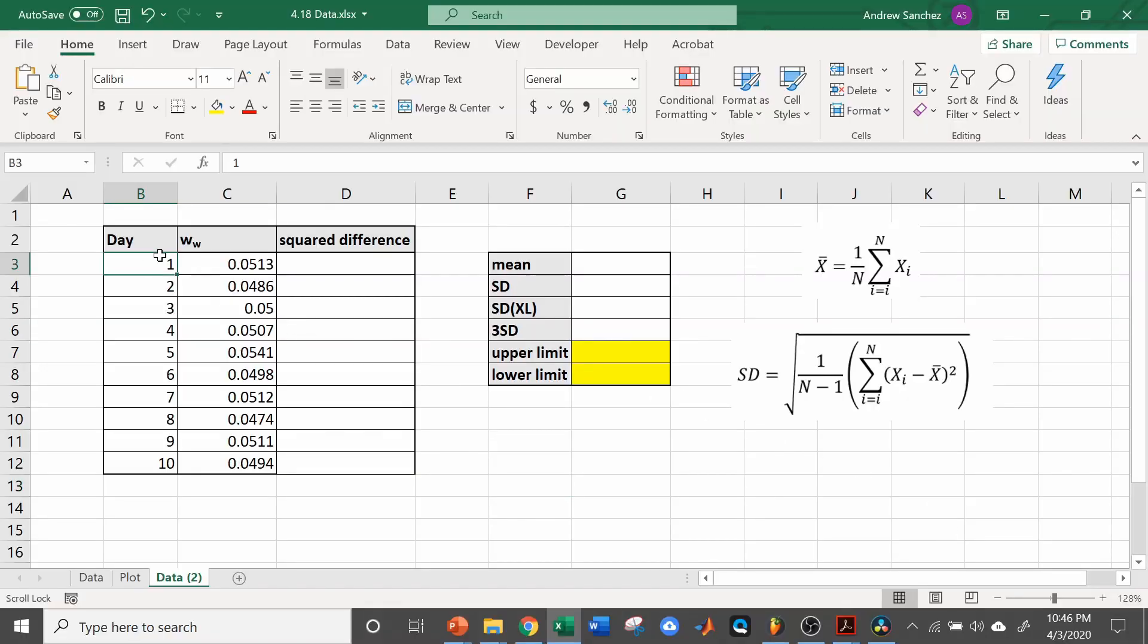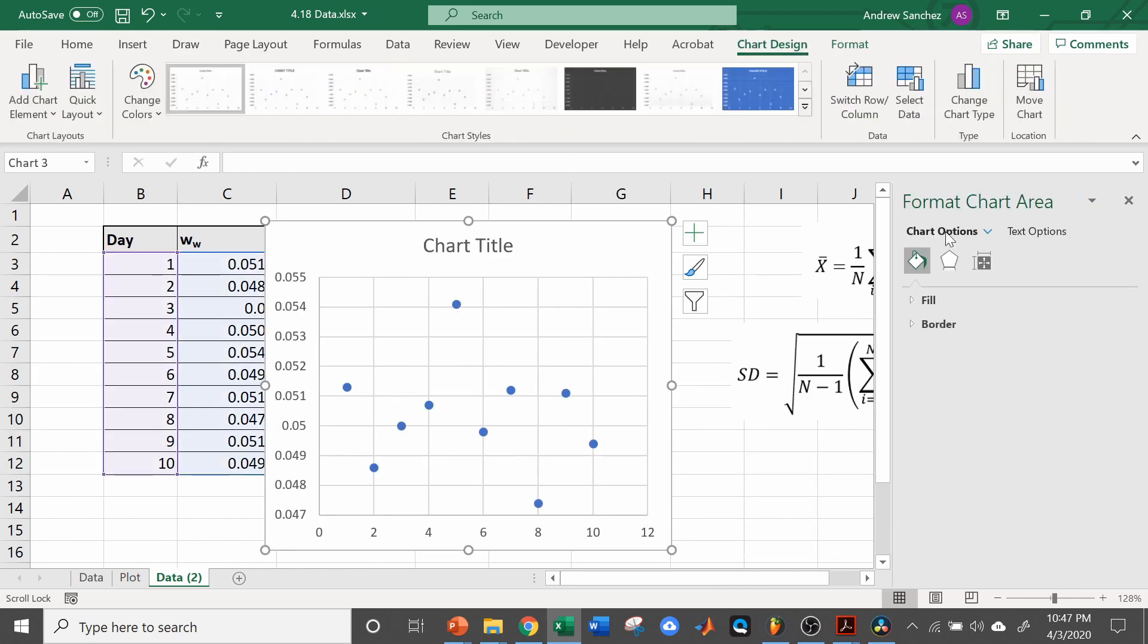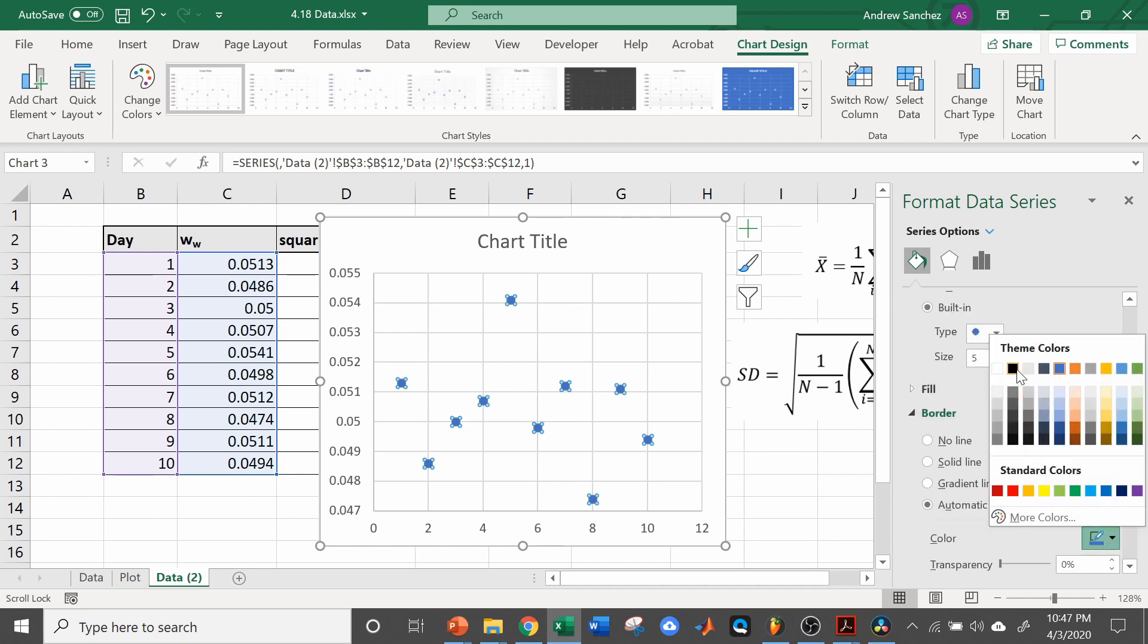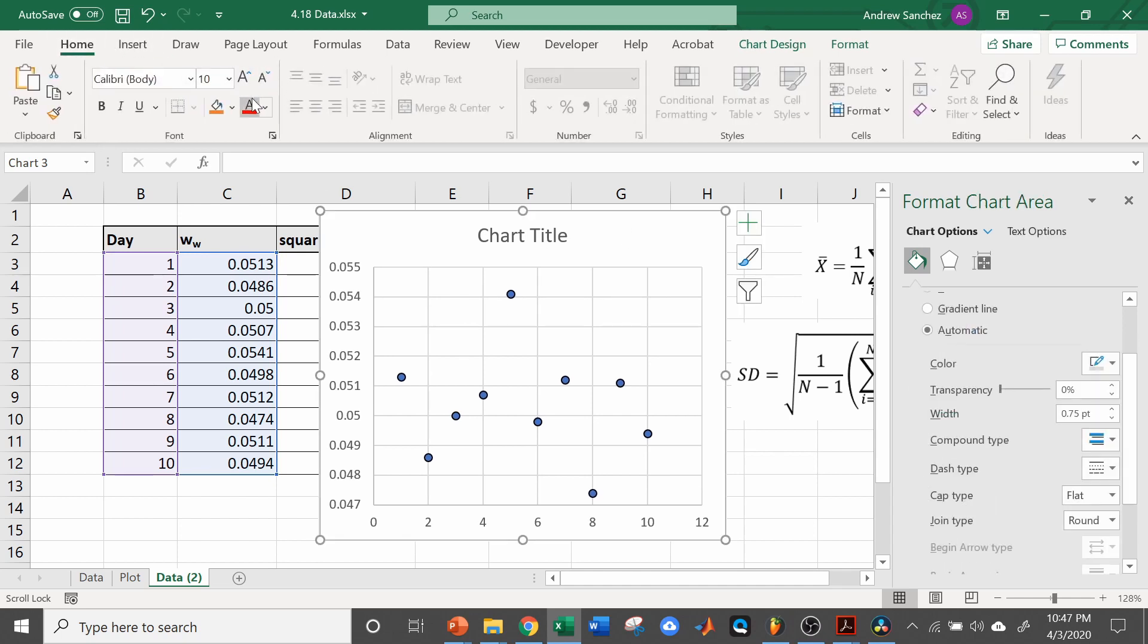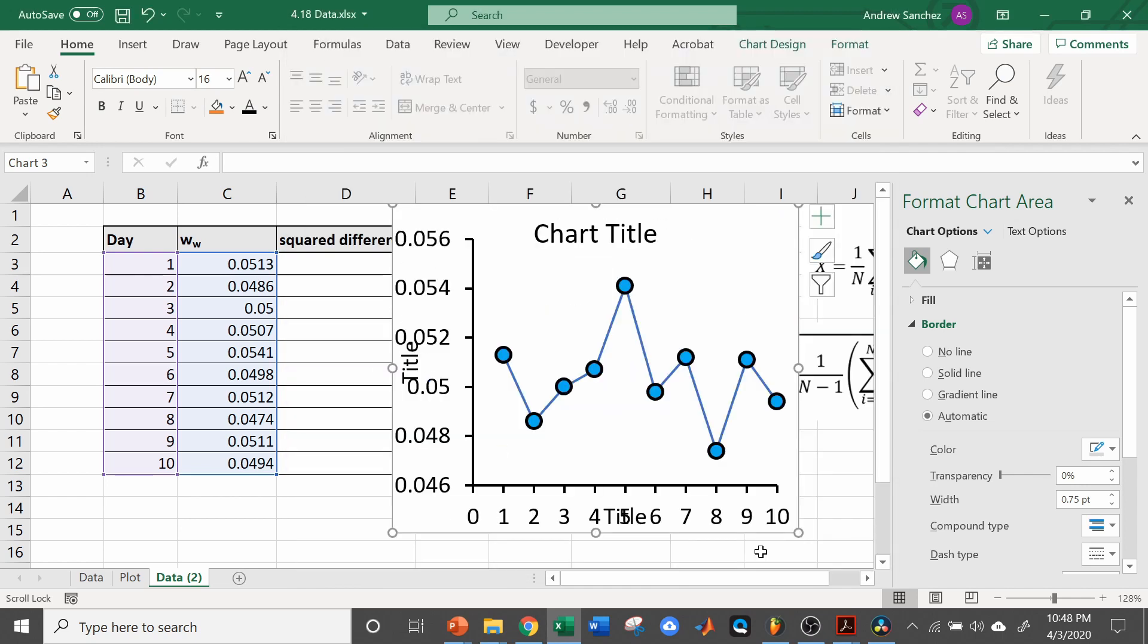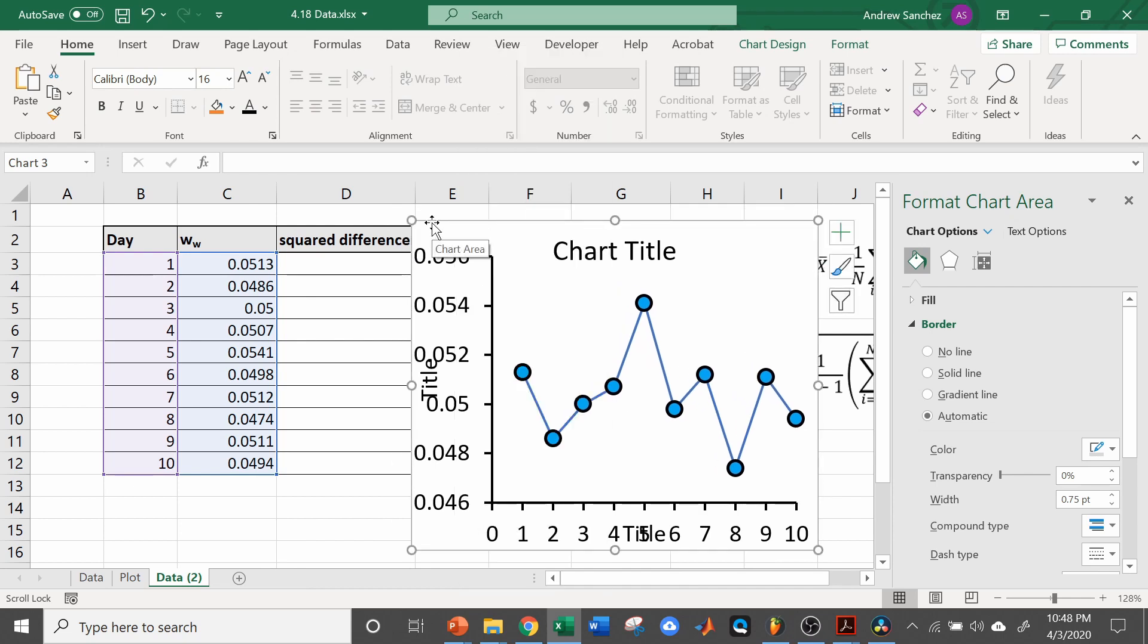The first thing you want to do is input all your data in Excel. This is just the given data, and we're going to have to calculate all these different things. So to plot it, you're going to highlight these two columns, go to insert, click this, for scatter plot. You can play around with the design of the figure by double clicking it, clicking on the data, changing the color of the markers, changing the text font, or you can download the data in the description and change it as a template, which I've moved to this plot here.